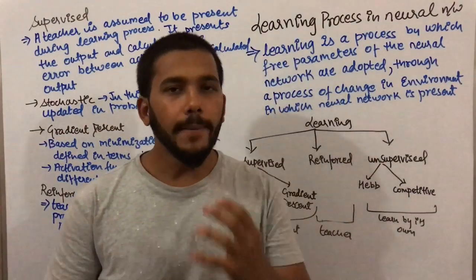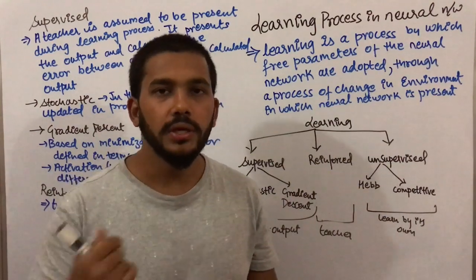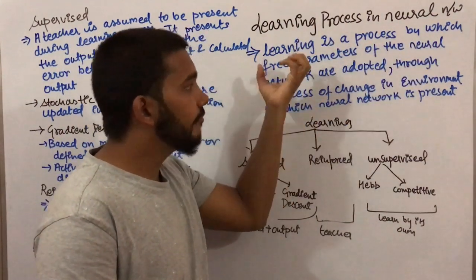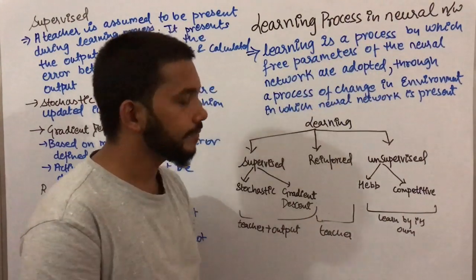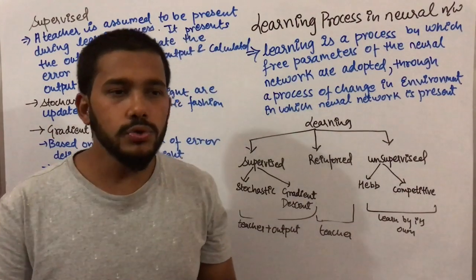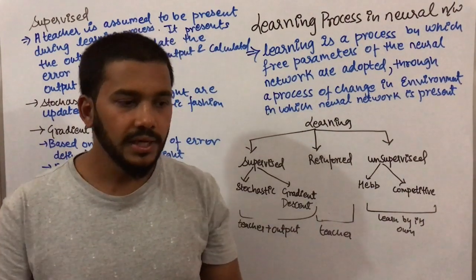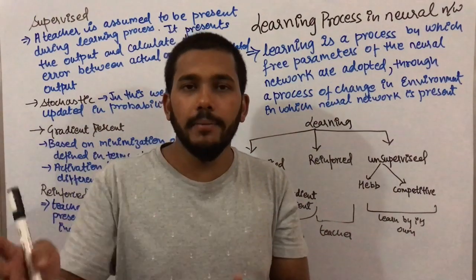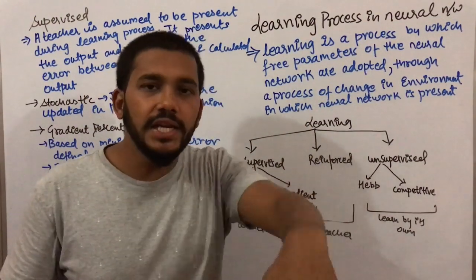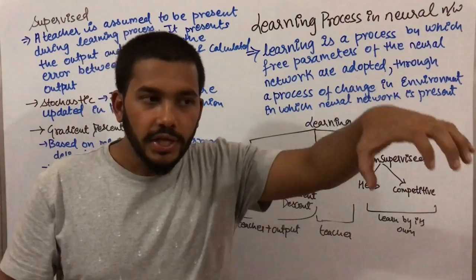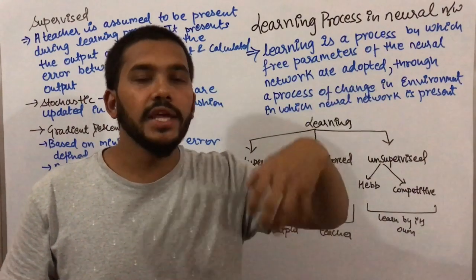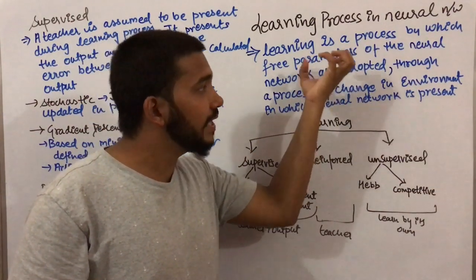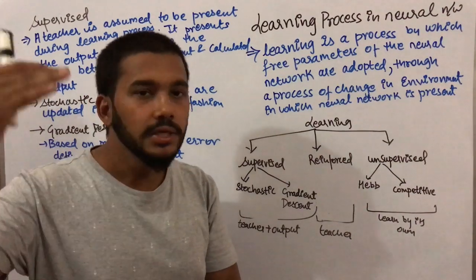In this video I am going to talk about the learning process in neural networks. Learning is a process by which free parameters of the neural network are adopted. For example, if I want to learn how to play football or how to sing, these parameters are freely available in our environment, and I need to adopt them.